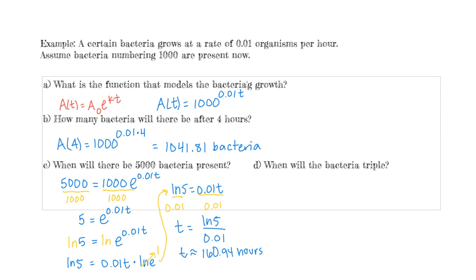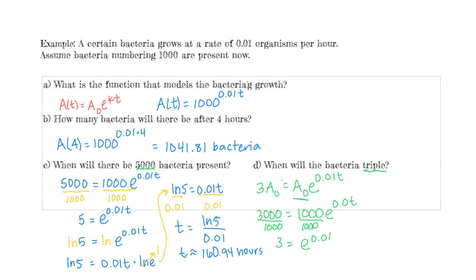The last question asks when will the bacteria triple — when will it be 3000. What I want to show here is that if your function starts with any arbitrary initial amount A naught, tripled is just 3·A₀. In our example that's 3000. But we don't actually need the initial amount to solve, because when we divide both sides by A naught, they cancel out and we're just left with 3 on the left-hand side.